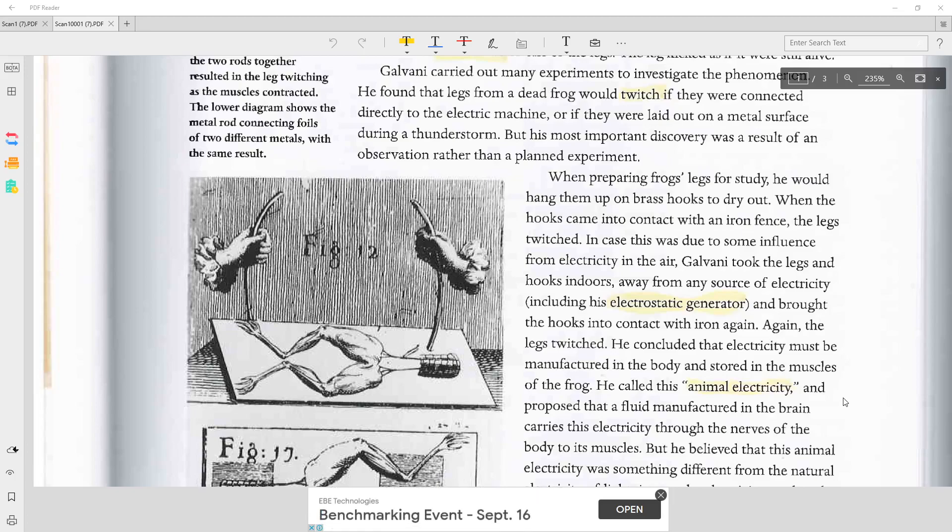He concluded that electricity must be manufactured in the body and stored in the muscles of the frog. He called this animal electricity and proposed that a fluid manufactured in the brain carries this electricity through the nerves of the body to its muscles.